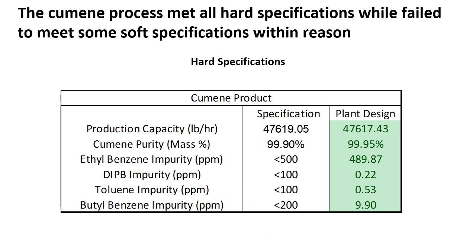Having covered an overview of the process, I will discuss the different specifications that need to be met by our design. There are two kinds: hard and soft. Hard specifications must be met for the design to be feasible. First, specifications for our cumene product include production capacity within provided limits and cumene purity above 99.9%, with different impurities staying below certain thresholds. As can be seen in the green column, all of these specs are being met by our current design.